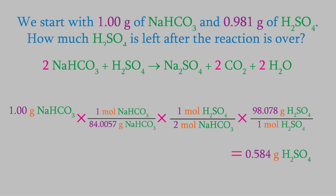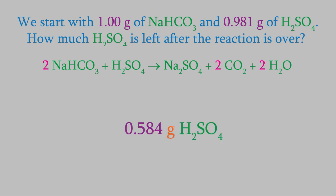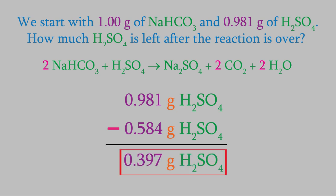So that's how much sulfuric acid got used in our reaction. But the question asked how much was still left over. To get that, we just subtract the 0.584 grams that we used from the amount we started with, giving us 0.397 grams left over.